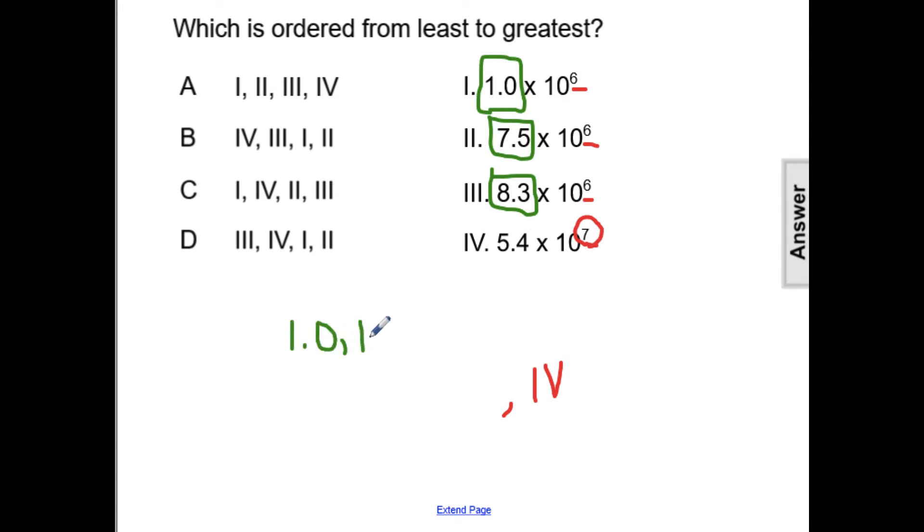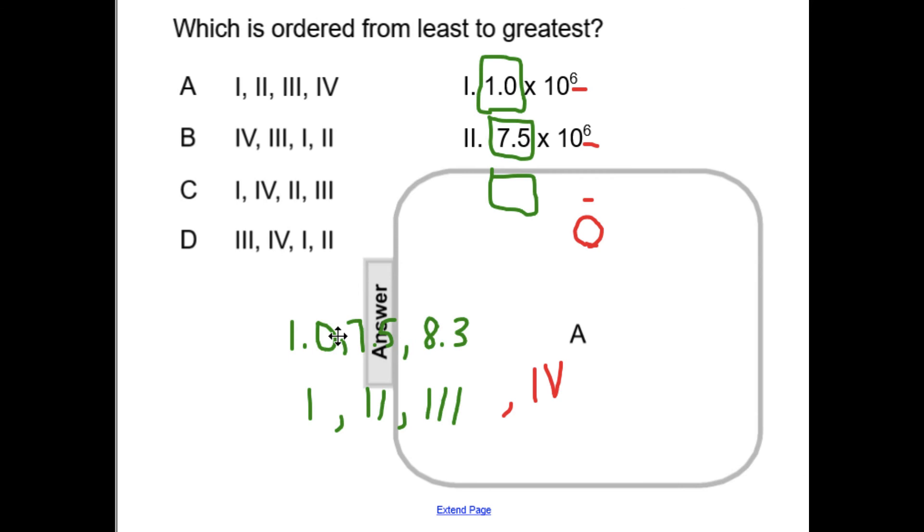Following suit, our numbers from least to greatest would be 1, 2, and 3. Joining with our fourth number being the greatest of all gives us our order: 1, 2, 3, 4, or answer choice A.